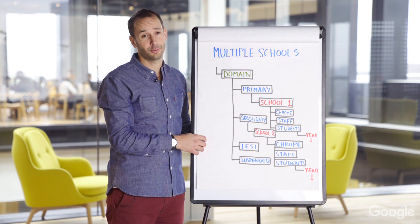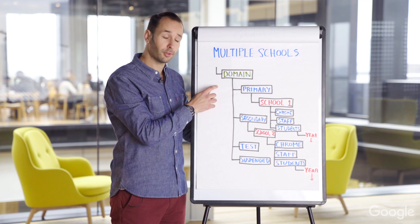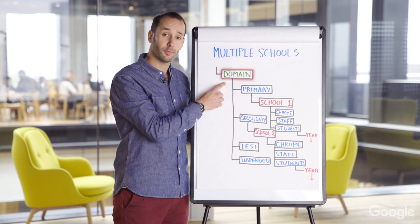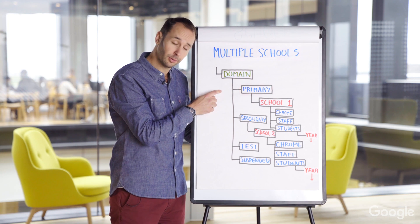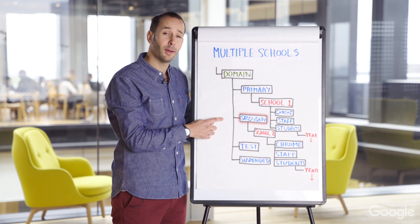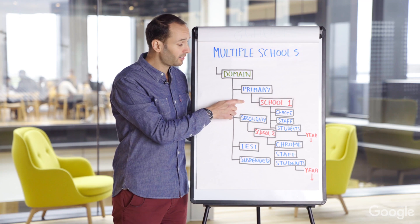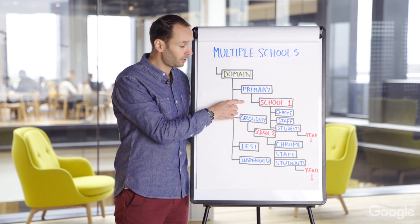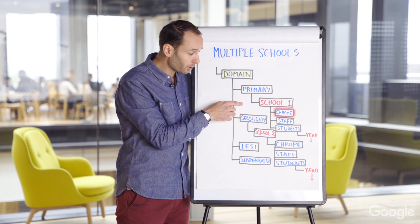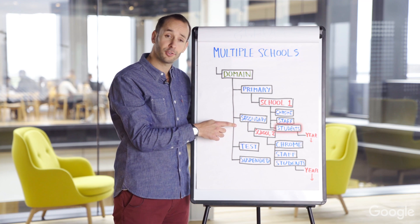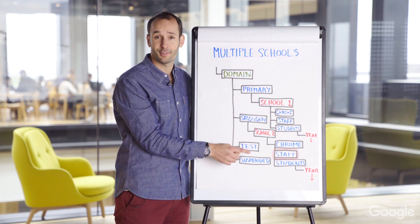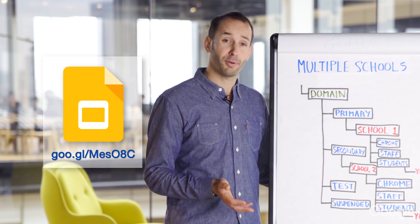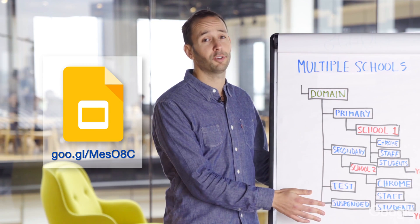Now let's take a look for multiple schools. This is the same OU structure with an OU for the domain at the root. Then we've actually created separate ones for primary schools and for secondary schools. Underneath that is where we list the actual schools, and you'll see we still have the Chromebook, Staff, and Students OUs — and the same for the secondary schools. We've also created a presentation which outlines all these options.